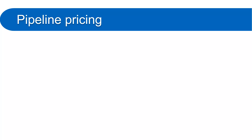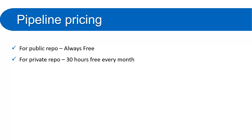Pipeline pricing: for public repositories, pipeline is always free. For private repositories, pipeline is free for 30 hours every month. If you use more than 30 hours in a month you have to pay some amount to Azure DevOps. But if your repository is public — meaning you are working on an open source project — it will always be free.